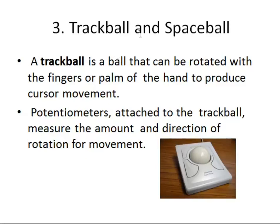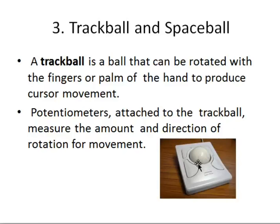The third one is trackball and spaceball. A trackball is a ball that can be rotated with fingers or the palm of the hand to produce cursor movement. There is a potentiometer attached below the trackball — the amount of movement, the direction of rotation, and the angle are all measured and recorded, and then the cursor is moved accordingly.